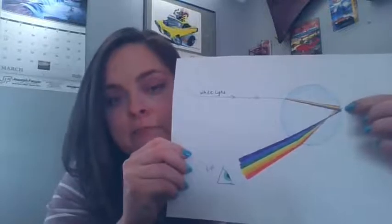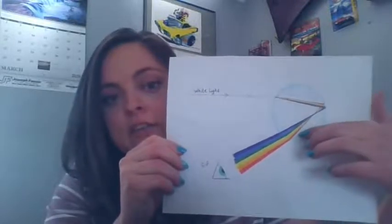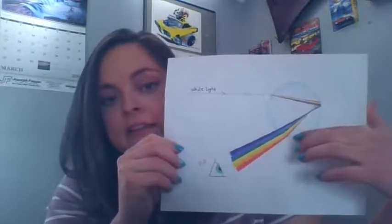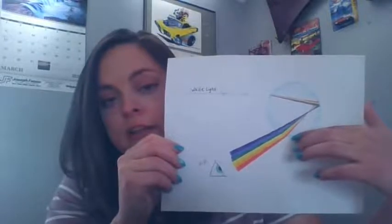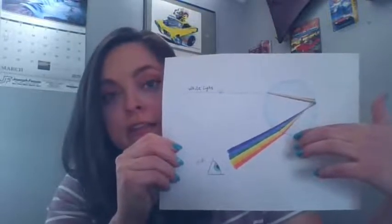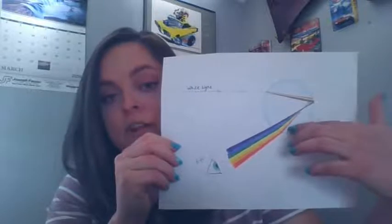That reflected light then goes out to the other side of the droplet and exits the water droplet here, and it again refracts at that surface of the water or gets bent.